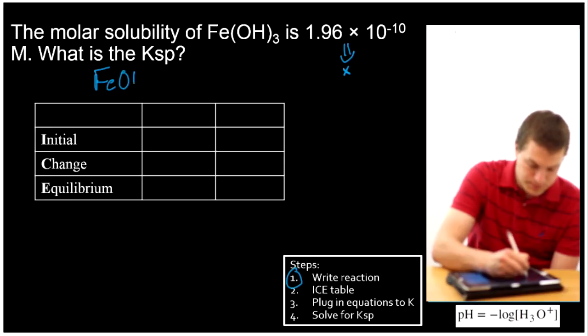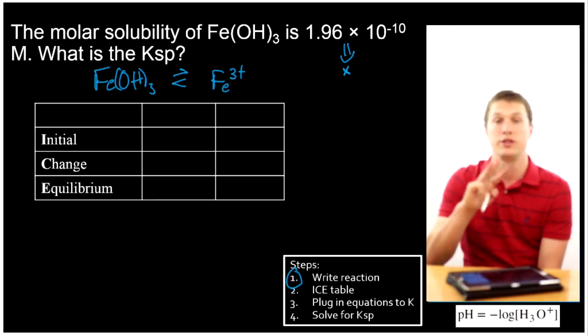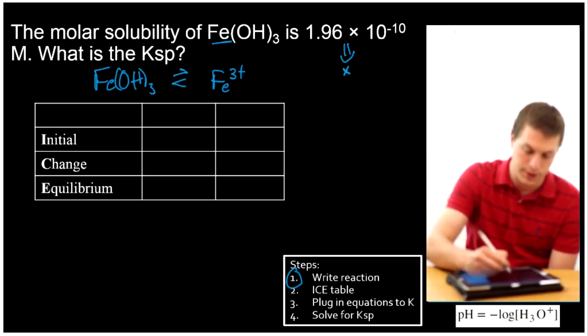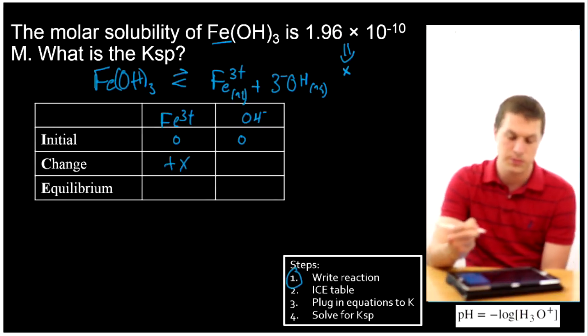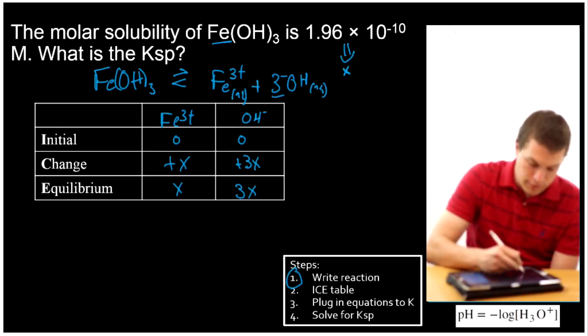First, we write a reaction, so we remember that iron hydroxide is dissolving, and when it dissolves, we're going to get iron 3 plus. That's because there's 3 hydroxides, each at minus 1. So to balance this guy out, this guy must be plus 3. Plus 3 of my hydroxides, and those are both aqueous. All right, now let's make my ICE table. I know this is Fe3+, I know this is OH-, my initial is 0 for both of them, my change is plus X. Now what should my change be for my hydroxide? Plus 3X, and that means at equilibrium I have X and 3X.